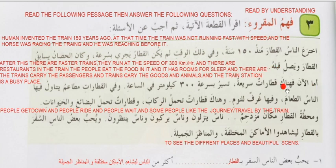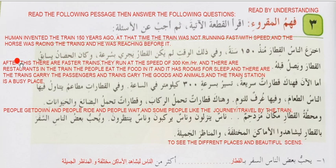Amma al-an — fa hunaak qitaarat sariya — now there are faster trains. Sariya means fast. They run at the speed of 300 kilometres per hour — tasir bi surah tlaatmiya kilometre fil-saah. Fissaati — per hour. Wa fi al-qitaarat matam — and in the trains there are restaurants. Matam is the plural. Yatanawilu fiha al-naas al-taam — the people eat food in it. Wa fiha ghuruf lil-naum — and it has rooms for sleeping. Guroofa is the singular, guroof is the plural.